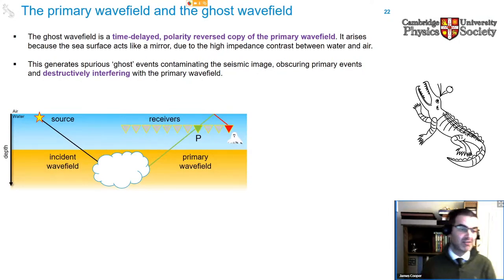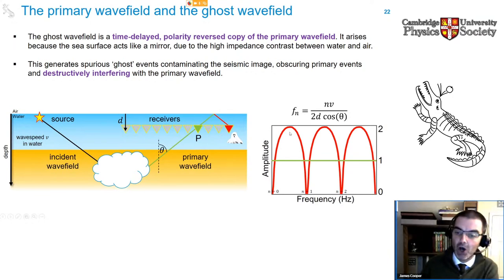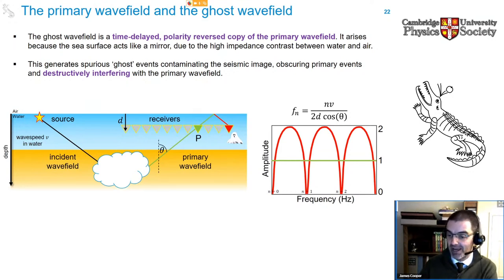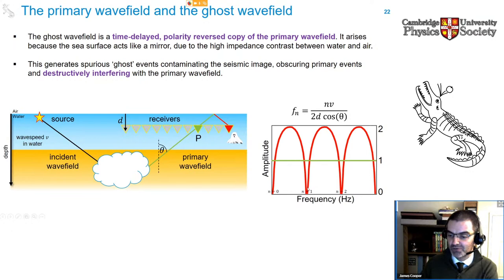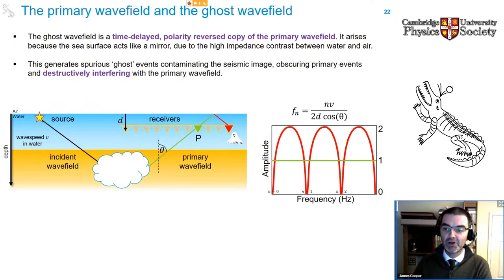Primary and ghost wave fields interact creating a constructive and destructive interference pattern. This is a plot of amplitude against frequency: the red curve shows the combination of the primary and ghost wave field with a characteristic pattern of peaks and troughs (notches) relating to that interference. What we want is the nice flat spectrum corresponding to the primary-only wave field. At notch frequencies, we get complete cancellation of the primary and ghost. By removing the ghost from the seismic data via an inversion scheme, we not only reveal those obscured primary events but also restore the lost signal at those notch frequencies.